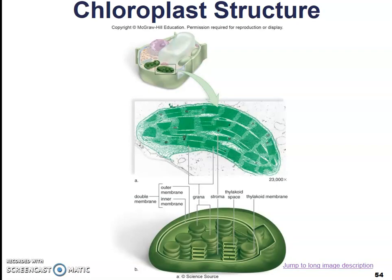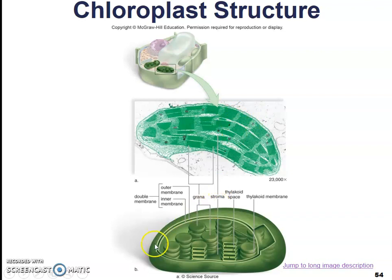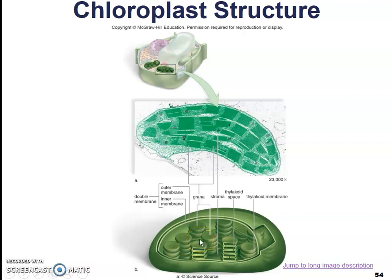Here is a diagram of the chloroplast structure. Notice it is only in plant cells — we know this is a plant cell because of the large central vacuole and the cell wall on the outside. Here's an actual image using an electron microscope; you can see the flattened sacs that are the thylakoids. And here we have a clearer diagram: the chloroplast is made up of a double membrane with thylakoids stacked into grana, providing a lot of surface area for chemical reactions to occur.